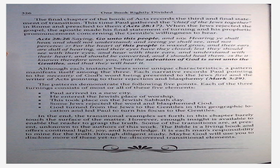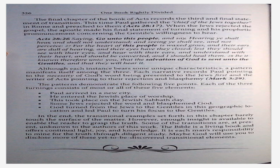Although each instance bears some unique characteristics, a pattern manifests itself among the three. Each narrative records Paul's pointing to the necessity of God's word being preached to the Jews first, and the writer of Acts pointing to their rejection and blasphemy — Mark 3:29. Patterns demonstrate the following five points. Each of the three turning points consist of most or all of these five elements. Number one: Paul arrived in a new city. Number two: he entered the Jewish place of worship. Number three: this took place on the Jewish Sabbath day. Number four: some Jews rejected the word and blasphemed God. Number five: God turned from the Jews to the Gentiles in this geographic location and led Paul to turn his focus to the Gentiles. In the end, the transitional examples set forth in this chapter barely touched the surface of the matter. However, enough insight is available to enable the reader to grasp the truth. Some of the transitions are, at present, unknown to the authors of this work. The Bible is a living book and offers continual light, joy, and knowledge. It is each man's responsibility to mine for the truth through diligent study. Maybe God will use you to disclose more of these yet-to-be-discovered transitional elements. That is the end of chapter 21.